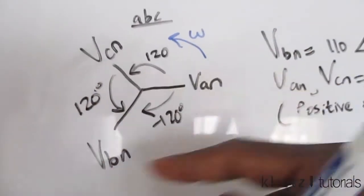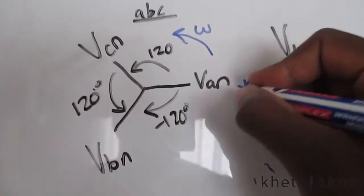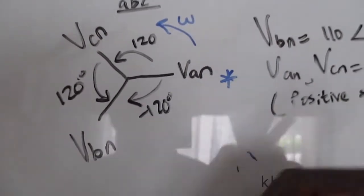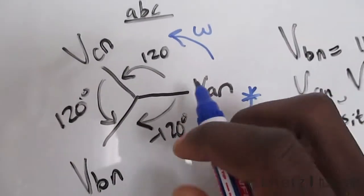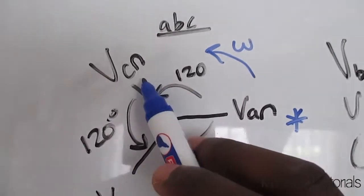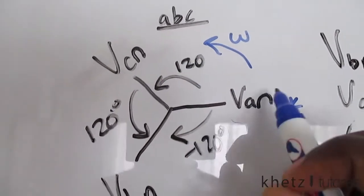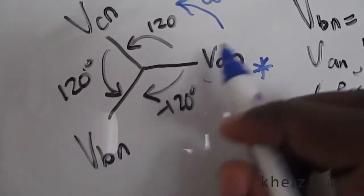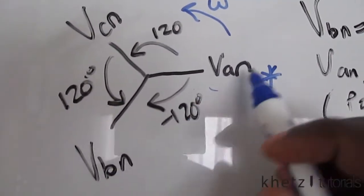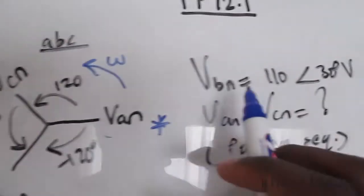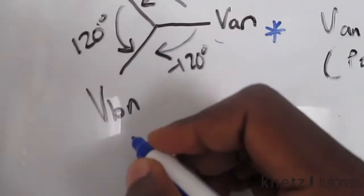We know that VCN is 120 degrees greater than VAN and VBN is 120 degrees less than VAN. So given VBN in this case which is 110 with an angle of 30 degrees, we're asked to find VAN and VCN.